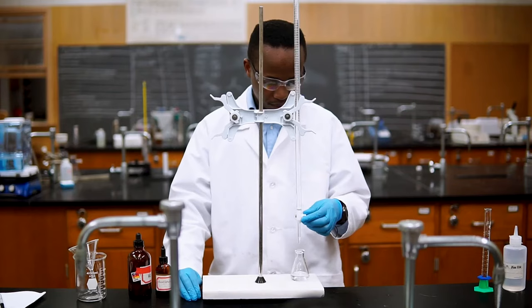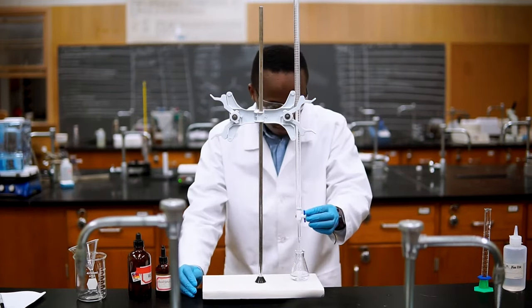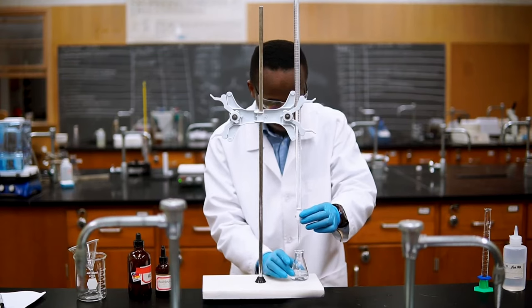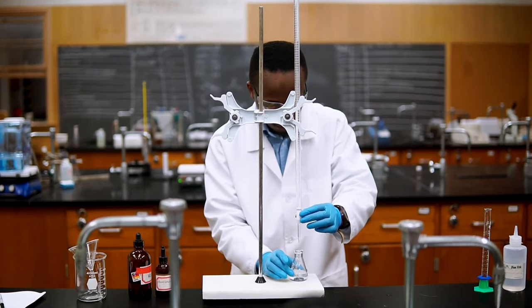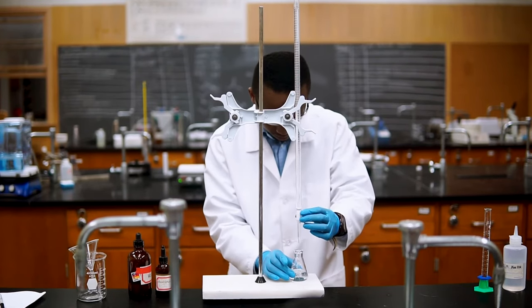We will start with what we call a rough titration, or quick and dirty titration. This is a quick run to get an idea of where our equivalence point will be. This rough titration saves a lot of time, but it is not very accurate so we won't use this data in our results.